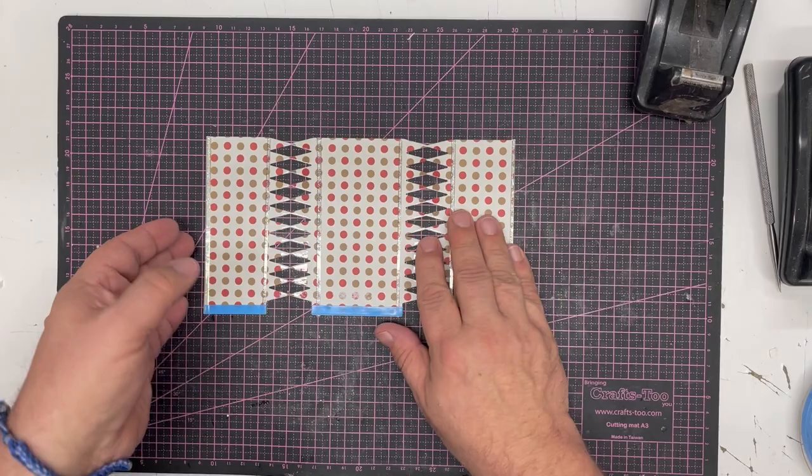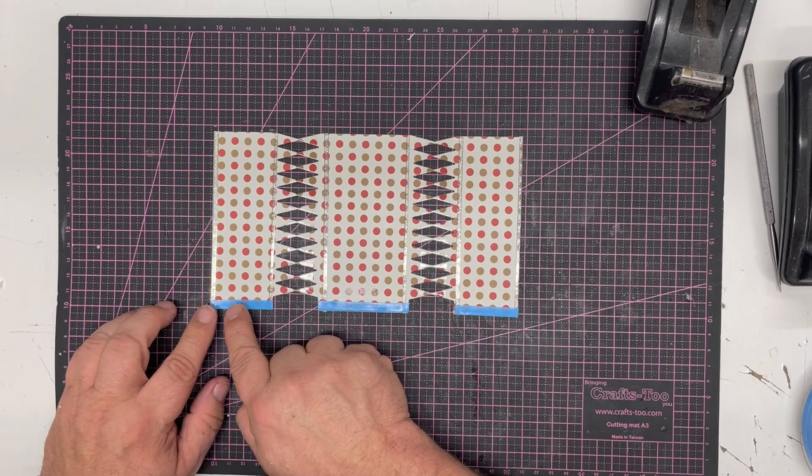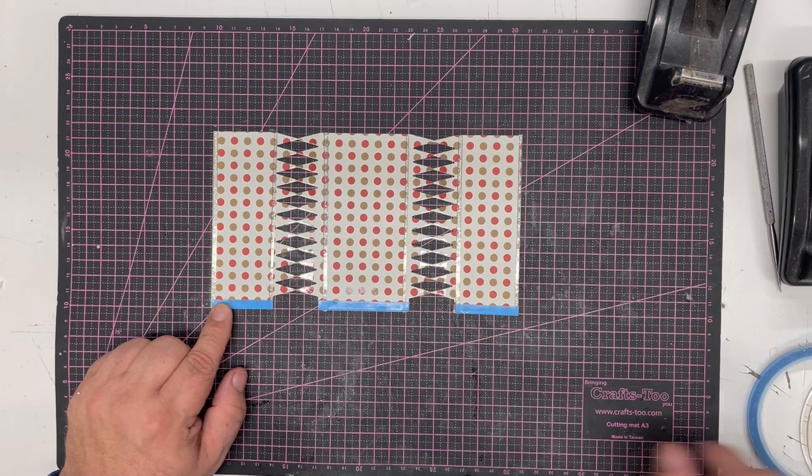All I've done is add on some holographic peel-offs on the lines just for a little bit of decoration, and then some six millimeter power tape down the three tabs. I would suggest using power tape or a very good red line tape for this.